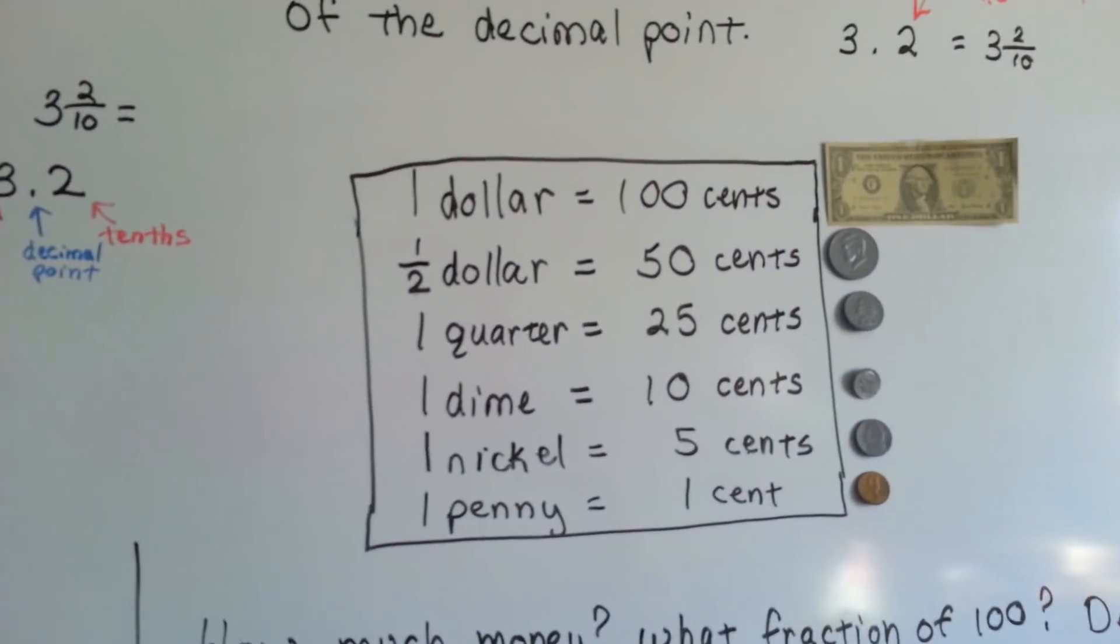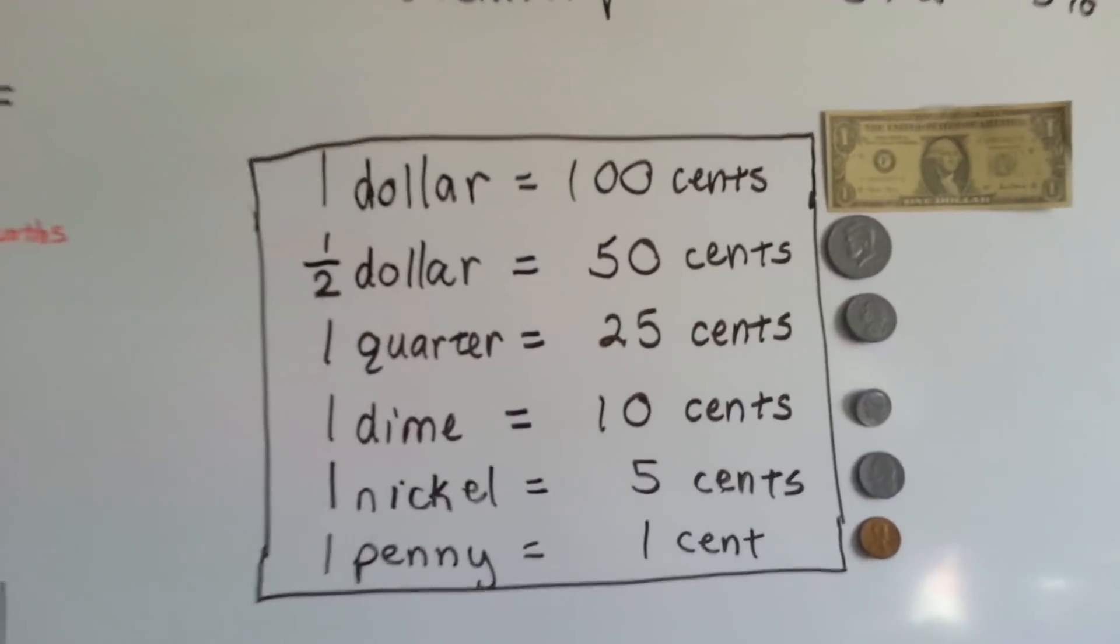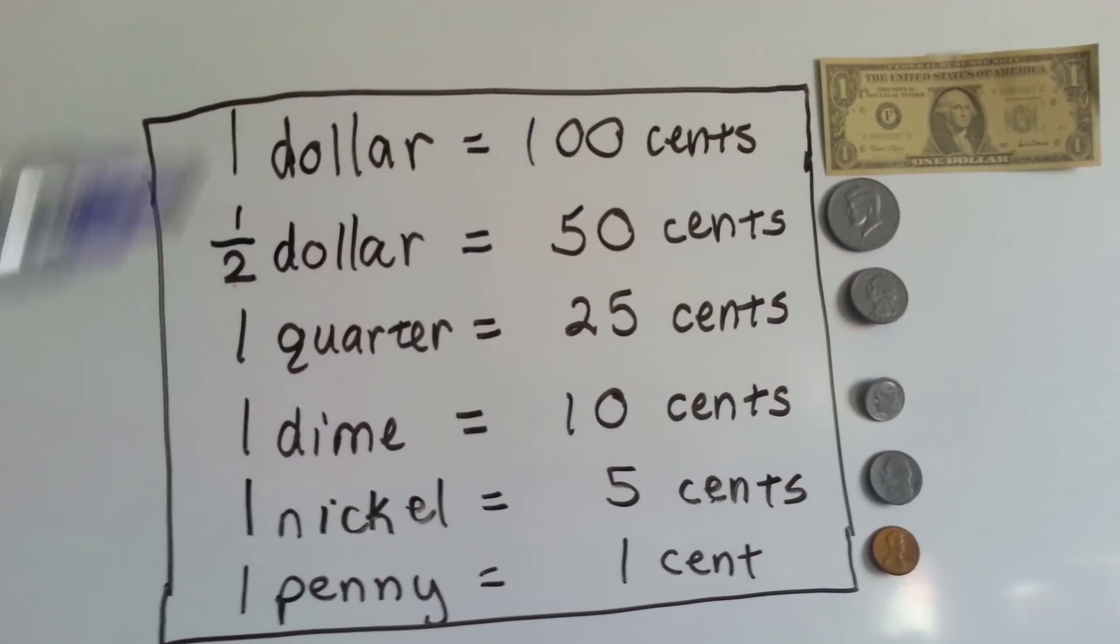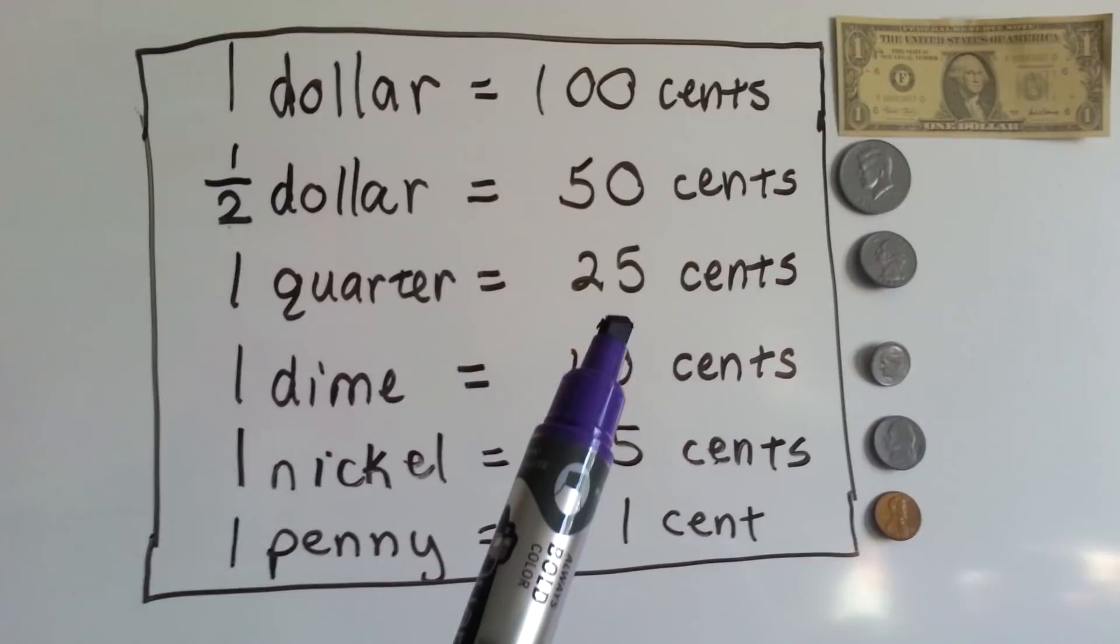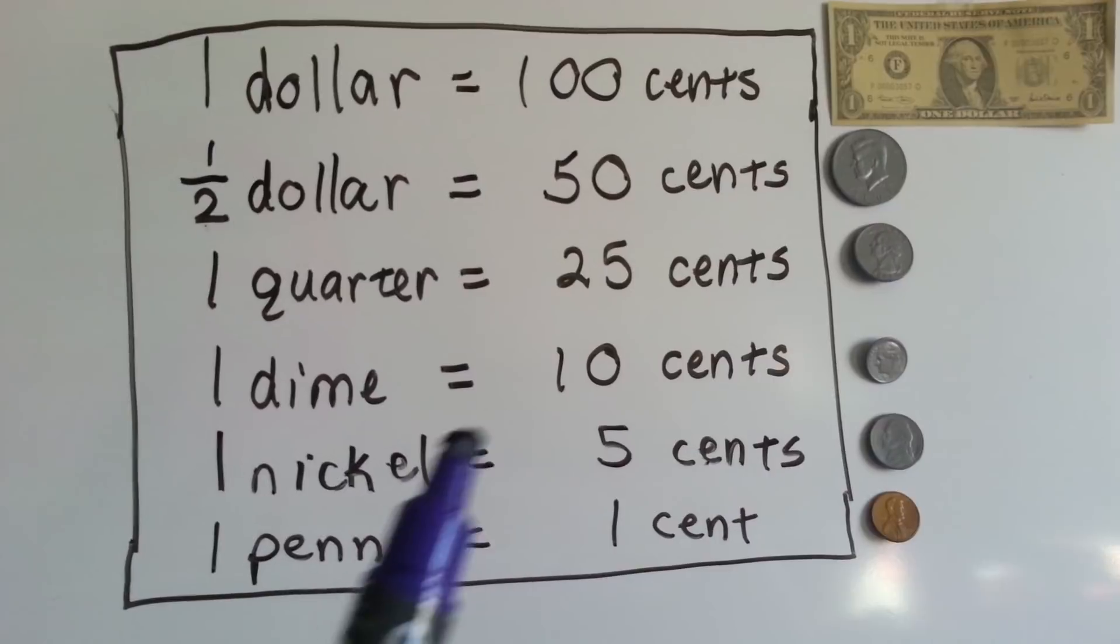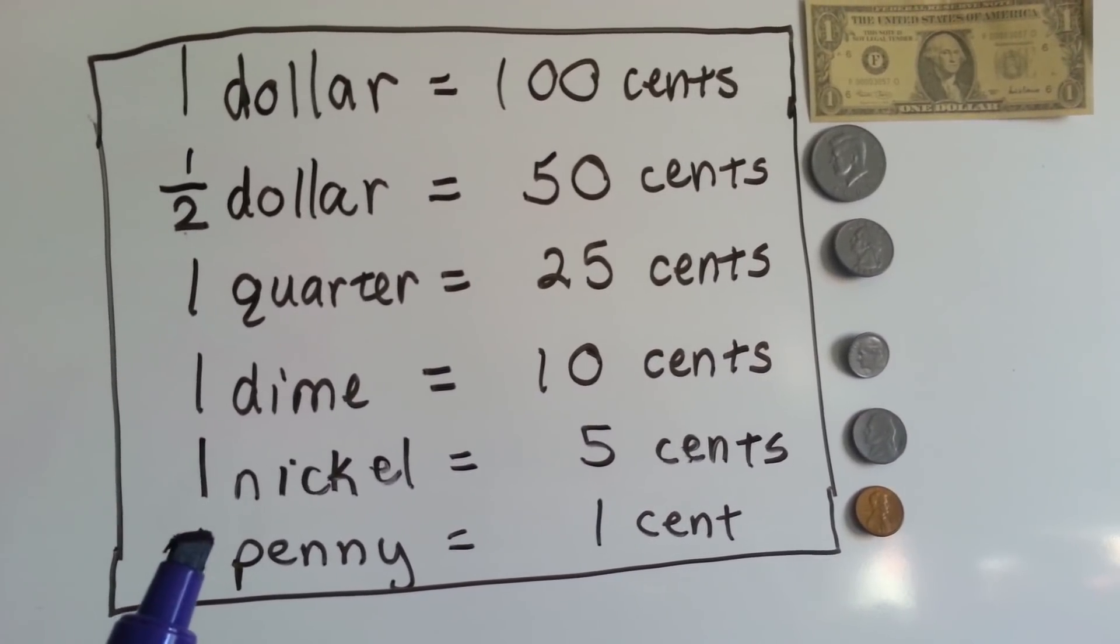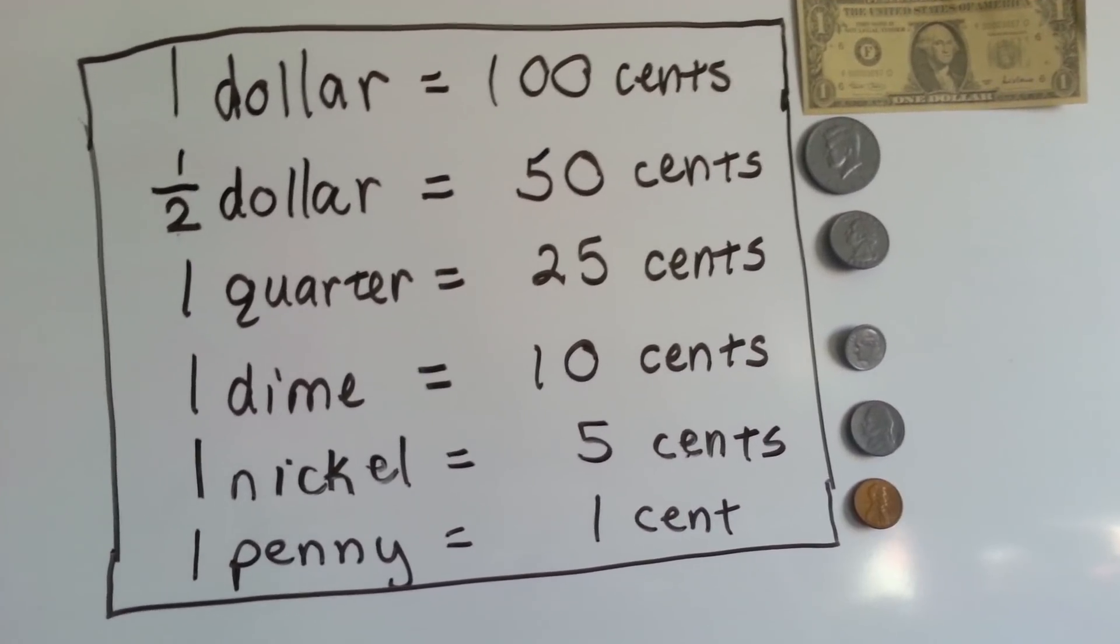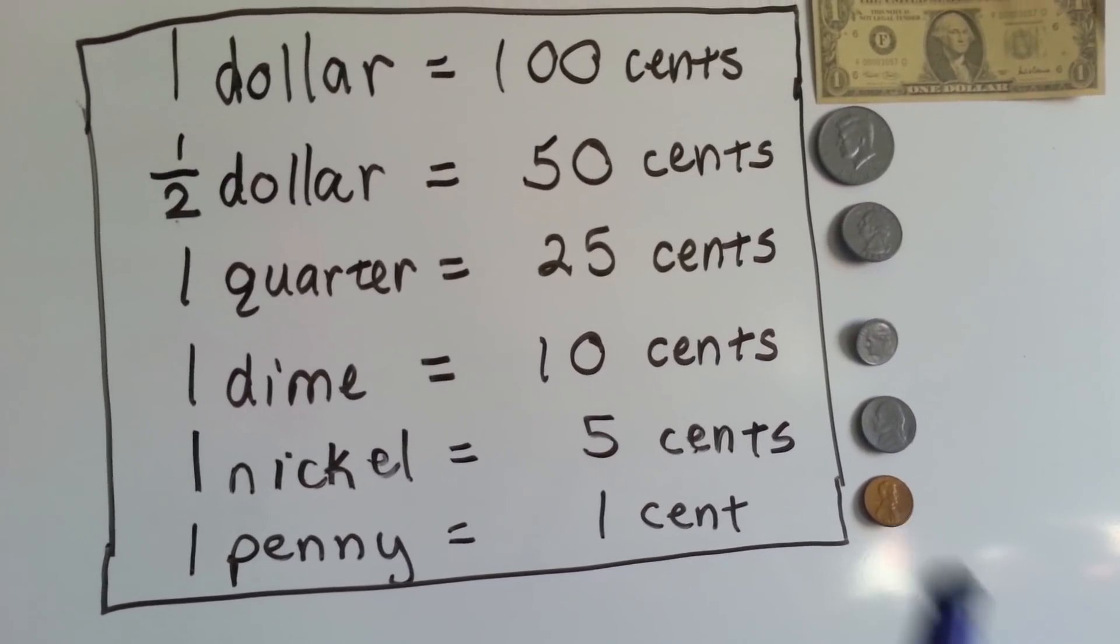We're also going to review that a dollar is 100 cents. Let's get a better look. A half dollar is 50 cents, it's got John F. Kennedy on it. One quarter is 25 cents, that's got George Washington on it. A dime is equal to 10 cents, that's got Eisenhower on it. One nickel is equal to 5 cents, that's got Thomas Jefferson on it. And one penny is equal to 1 cent, and that's got Abraham Lincoln on it.